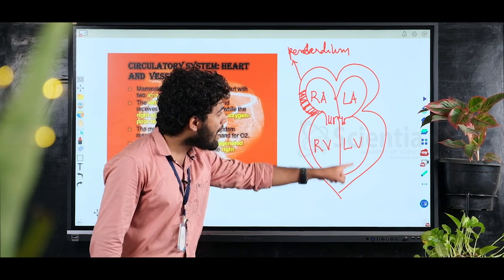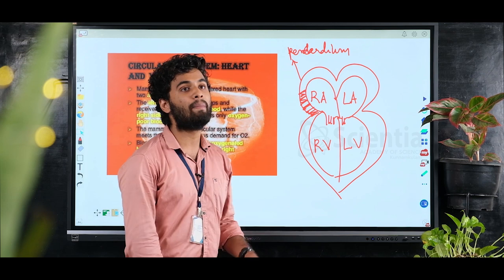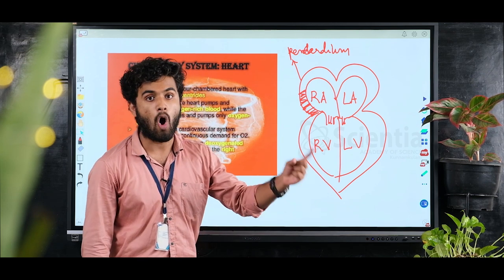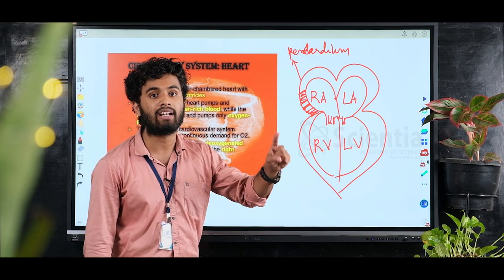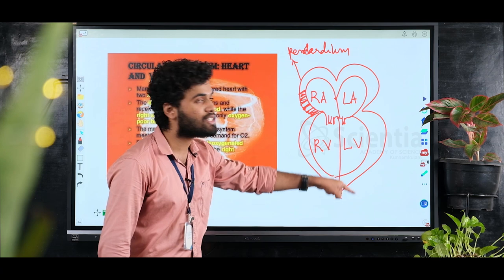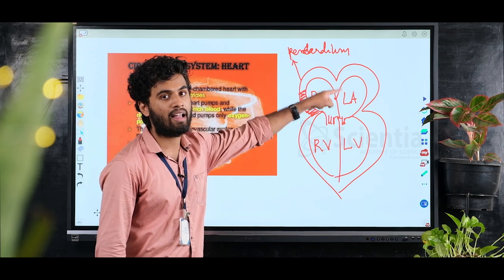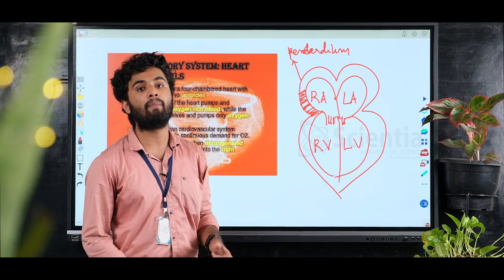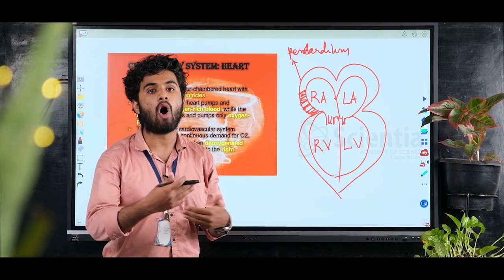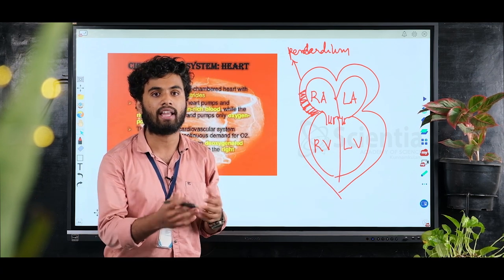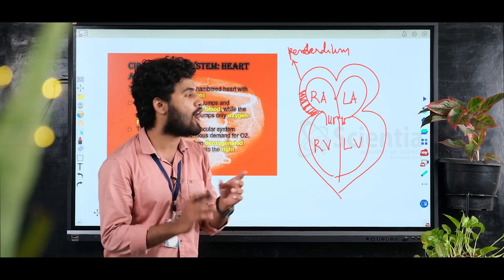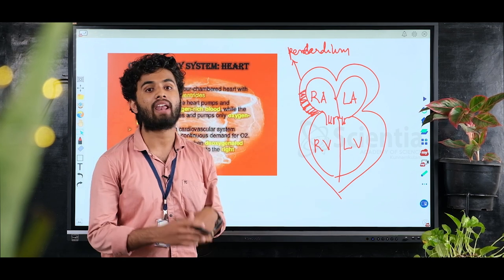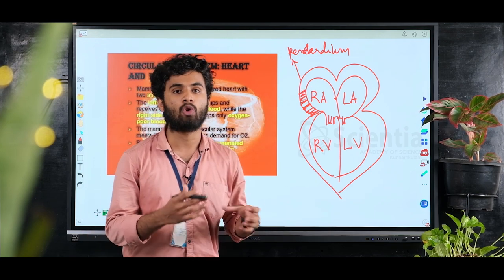The left part of the heart carries oxygenated blood, and the right side of the heart carries deoxygenated blood — that is, carbon dioxide-rich blood — which flows to the right side of the heart.